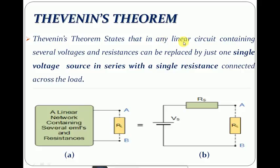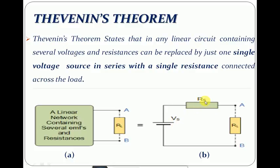What is Thevenin's theorem? Thevenin's theorem states that any linear circuit containing several voltages and resistances can be replaced by just one single voltage source in series with a single resistance connected across the load. From figure A, it is clear that the network is linear containing several EMFs and resistances connected across the load terminal AB. Here RL represents the load resistance. According to Thevenin's theorem, the overall network can be replaced by a single voltage source in series with a single resistance connected across the load terminal AB. Here VS represents the single voltage source, also called Thevenin voltage, and RS represents the single resistance, also called Thevenin resistance, as shown in figure B.